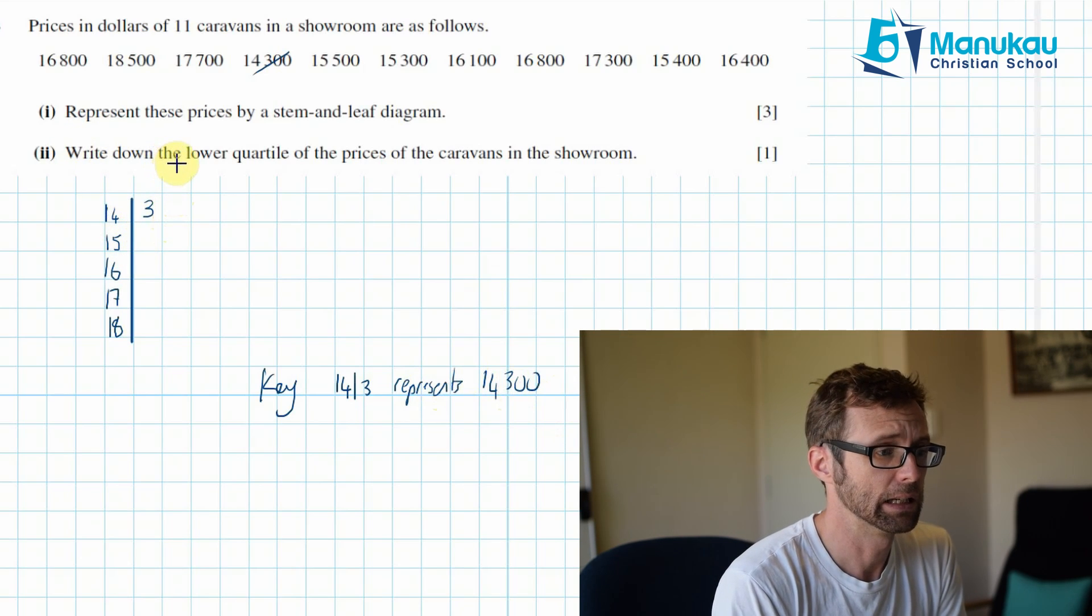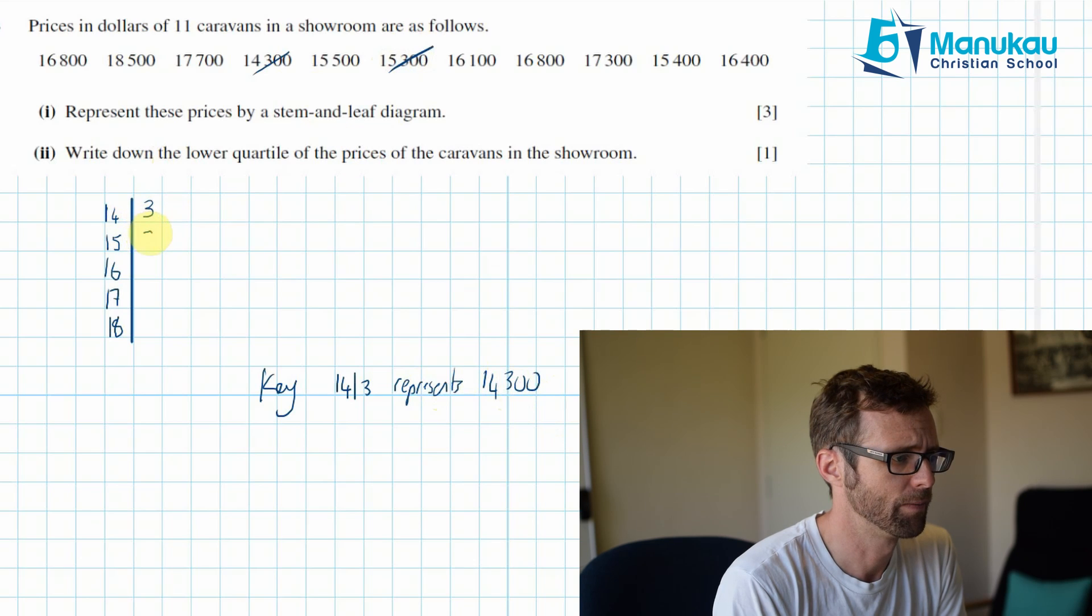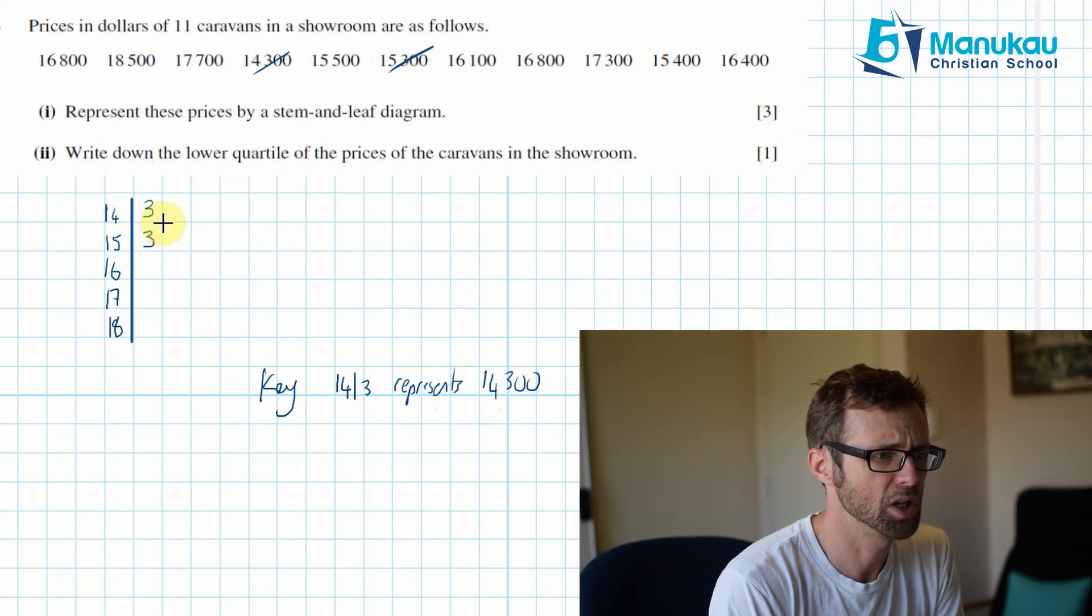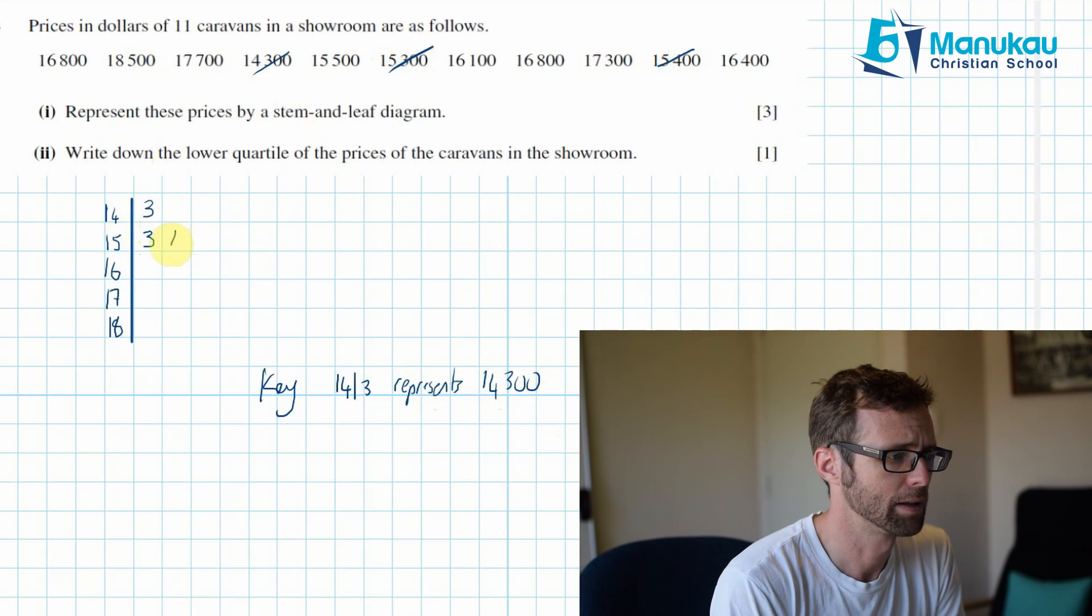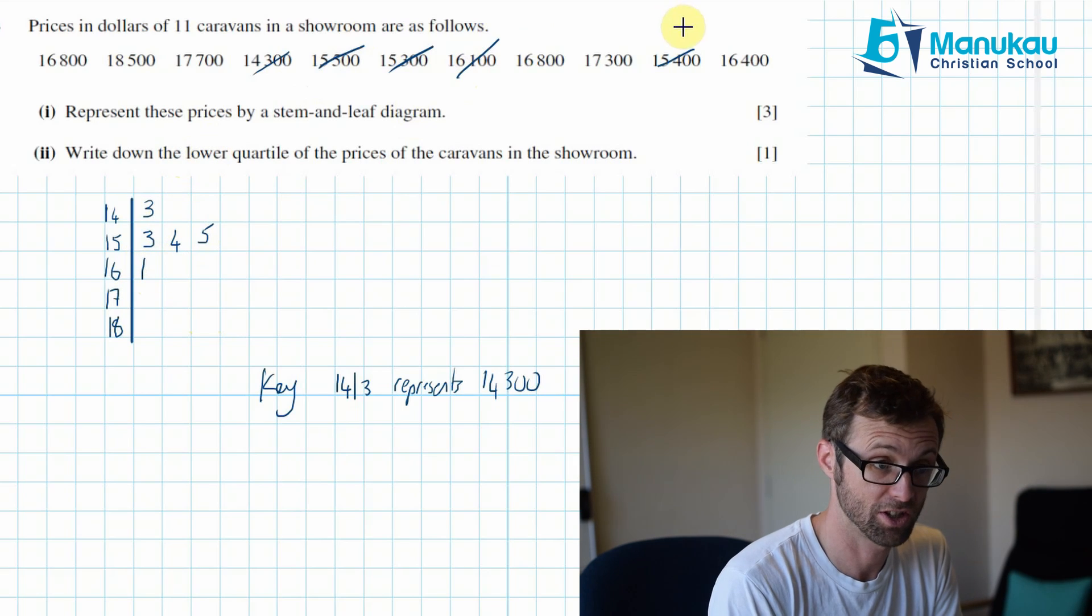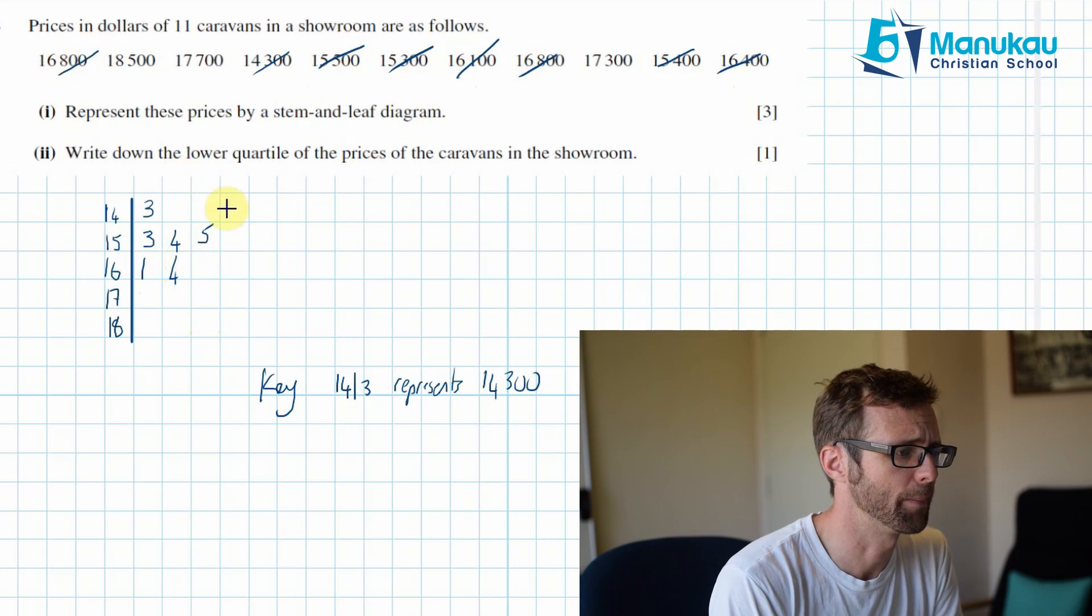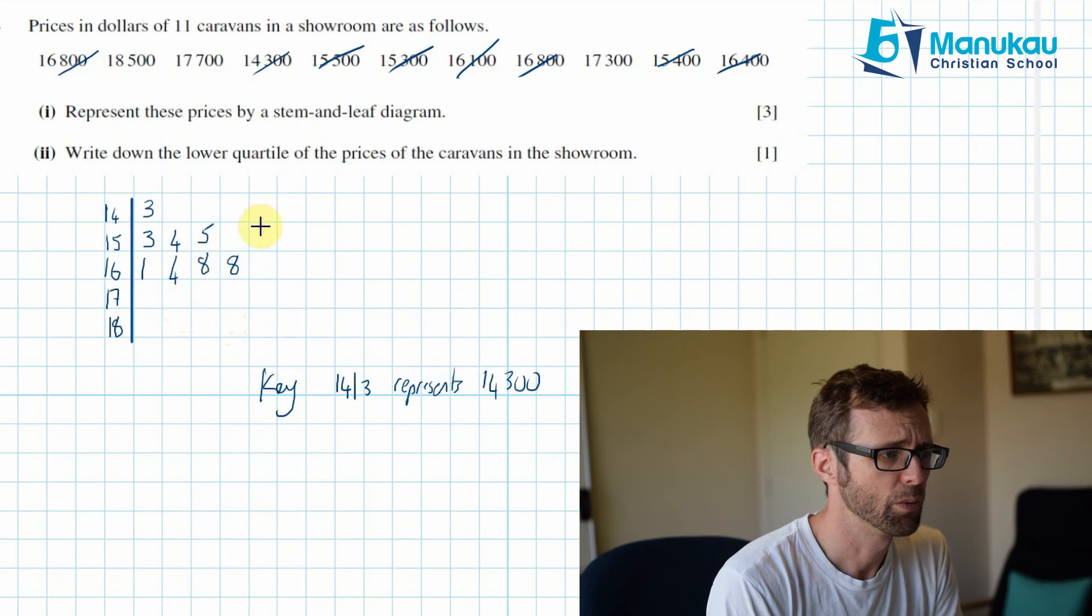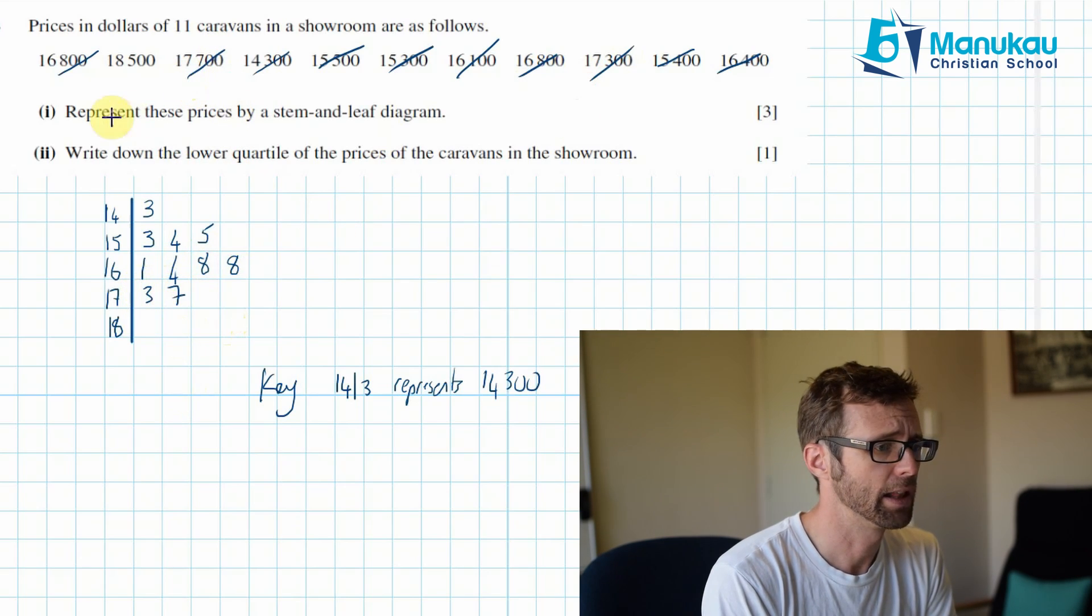The next lowest one, I think is this one, 15,300. And the next lowest seems to be 15,400. The next lowest seems to be 15,500. That's all of our 15,000. Let's move on to our 16,000. Hmm, 16,100 will be next. Then 16,400. And then we've got two 16,800s by the looks of it. So a couple of eights in here. And then a 17s. We've got a three, 17,300 and 17,700. Chuck those in like so. And then we're just left with our highest.